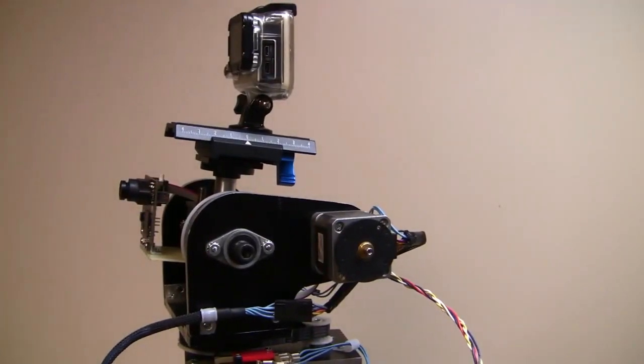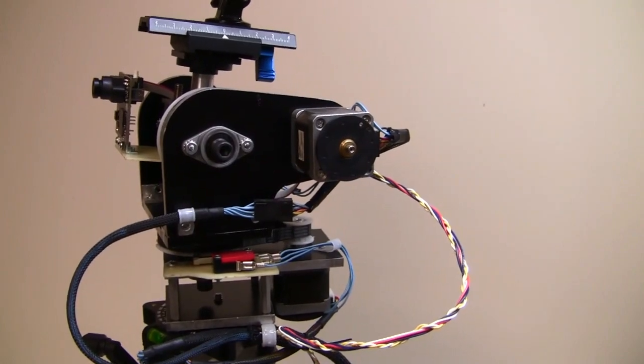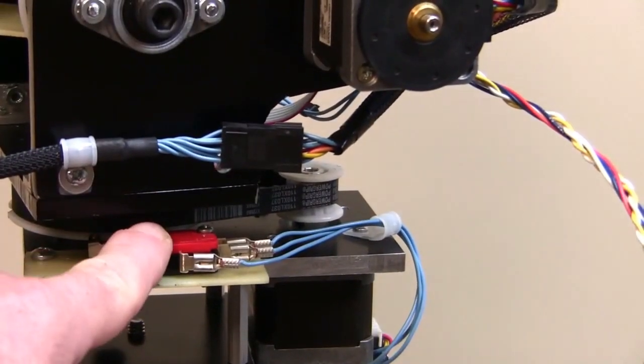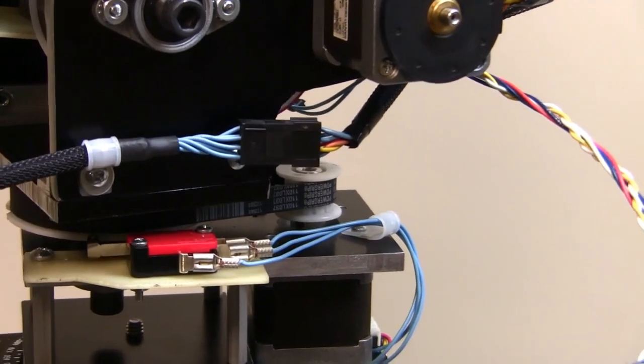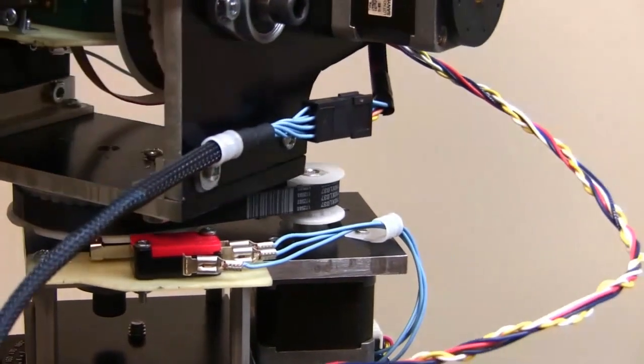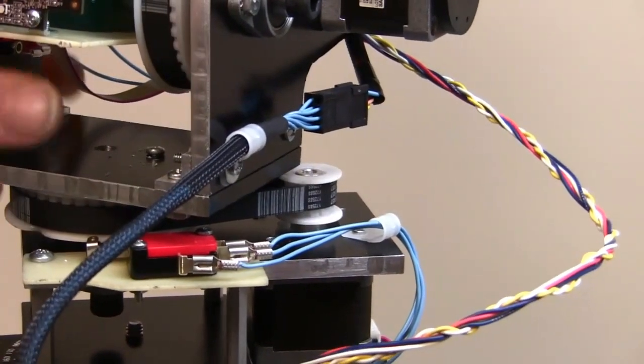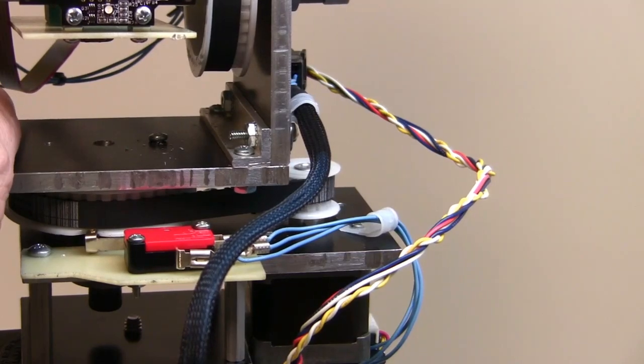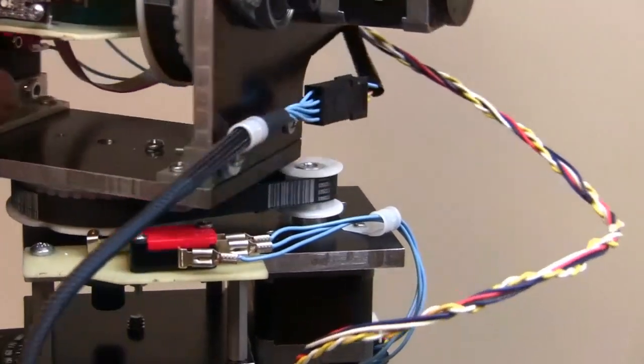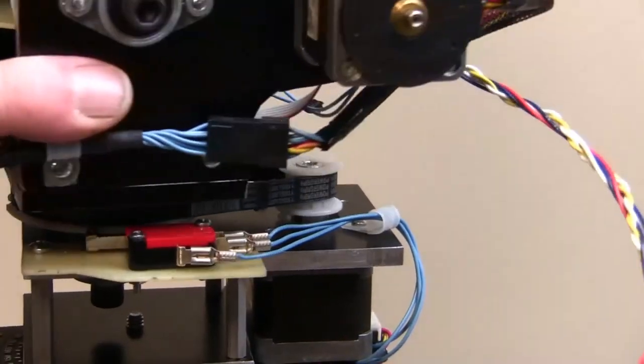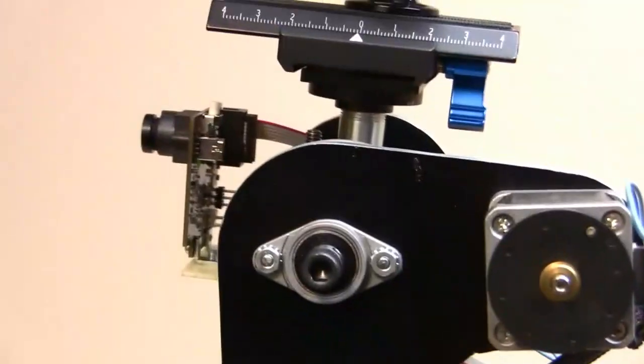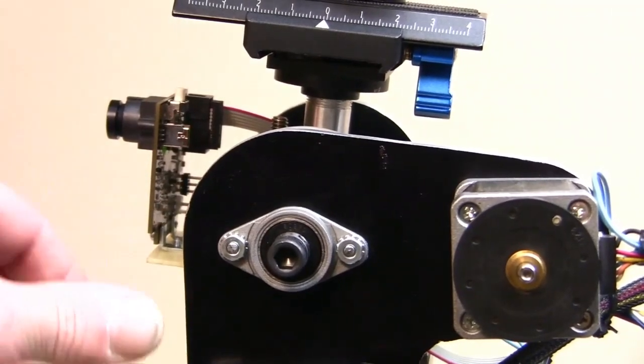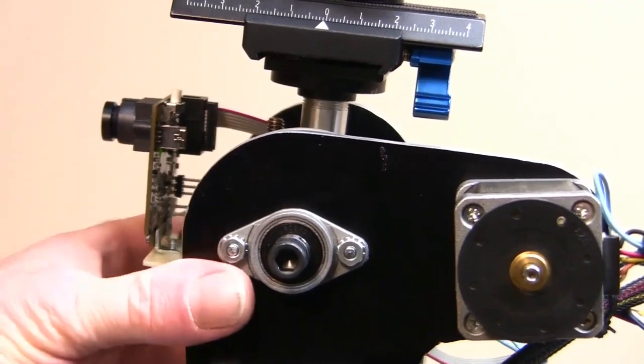Now the other thing I did is the limit switches here. These tell the computer where the camera is when it self-calibrates. When the camera gets to a certain point, like right there, it knows that it's hit the extreme left and then it'll go back and find center. It's same for the tilt. The tilt mechanism has the same thing.